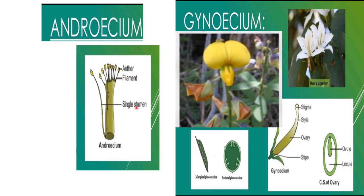Androecium: there are generally ten stamens. Nine stamens are united to form a tube around the ovary while the tenth stamen is free. This type of condition is called diadelphous. Whereas when stamens are free, that type of condition is called polyandrous.